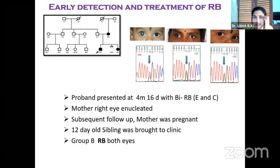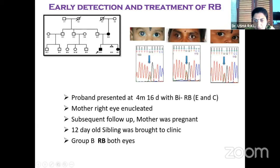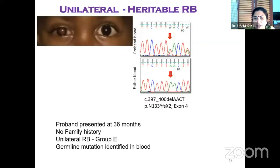In one case, the proband presented at 4 months with bilateral RB — the right eye was enucleated. During subsequent follow-up, the mother was pregnant. We found that the mother and the first child had the same mutation. We educated the mother to bring the child as early as possible. The 12-day-old sibling was brought to the clinic with group B retinoblastoma in both eyes with the same mutation, and we were able to treat the child early — not only saving the life but also the vision could be salvaged.